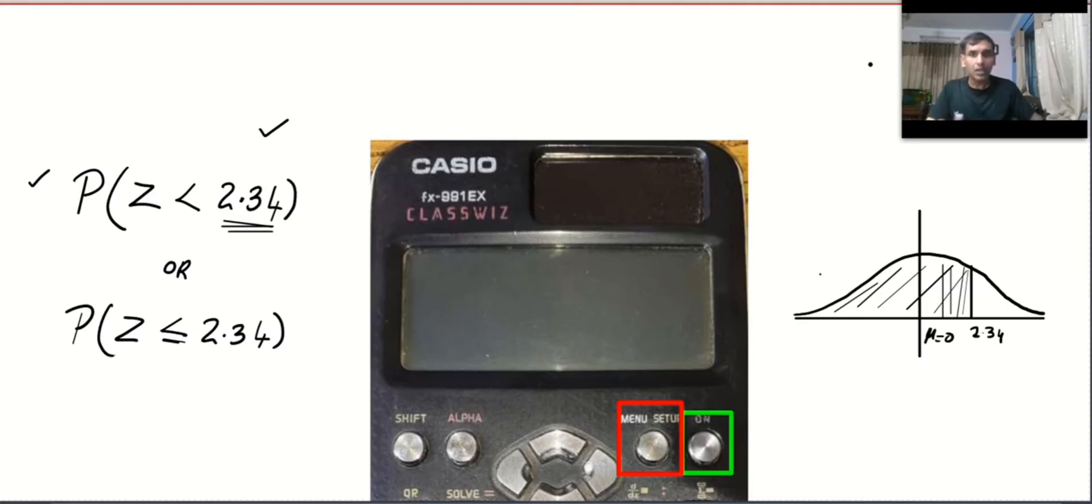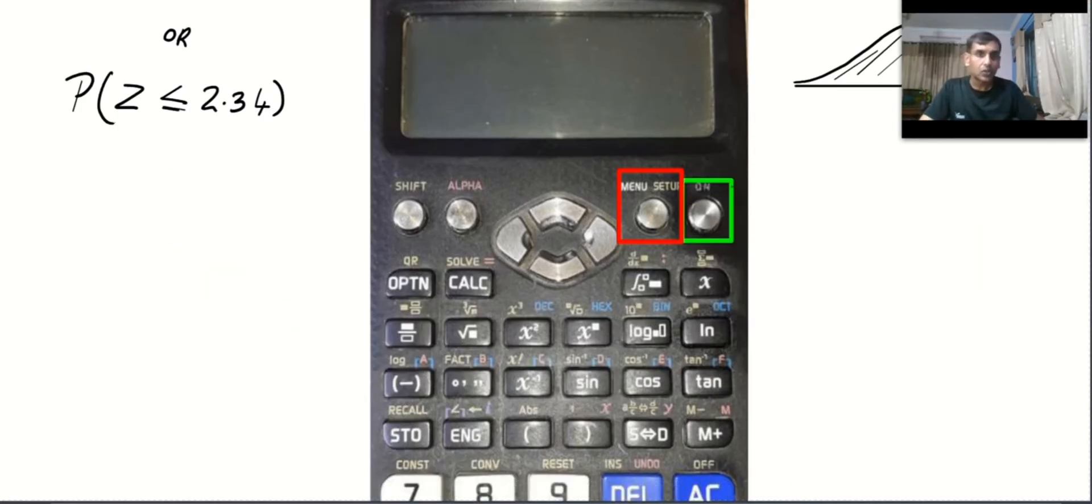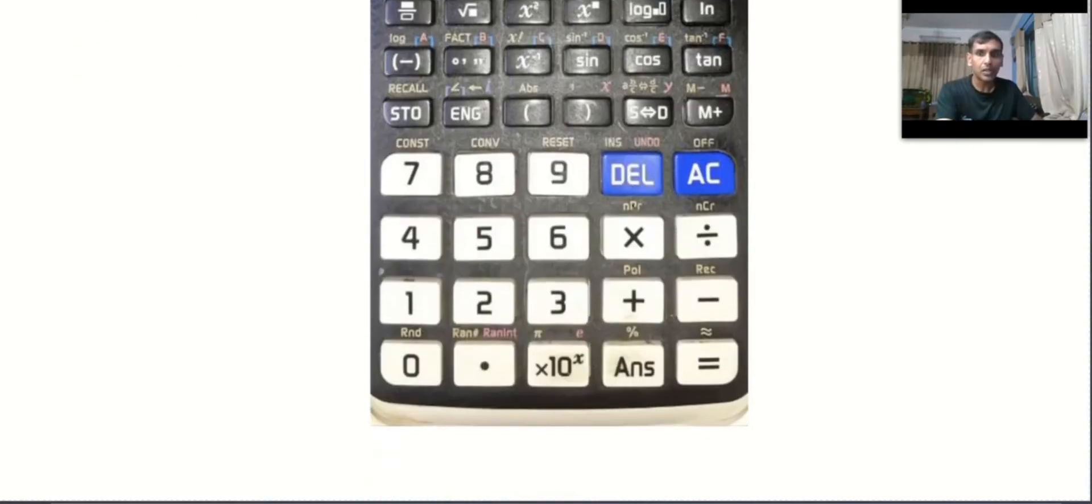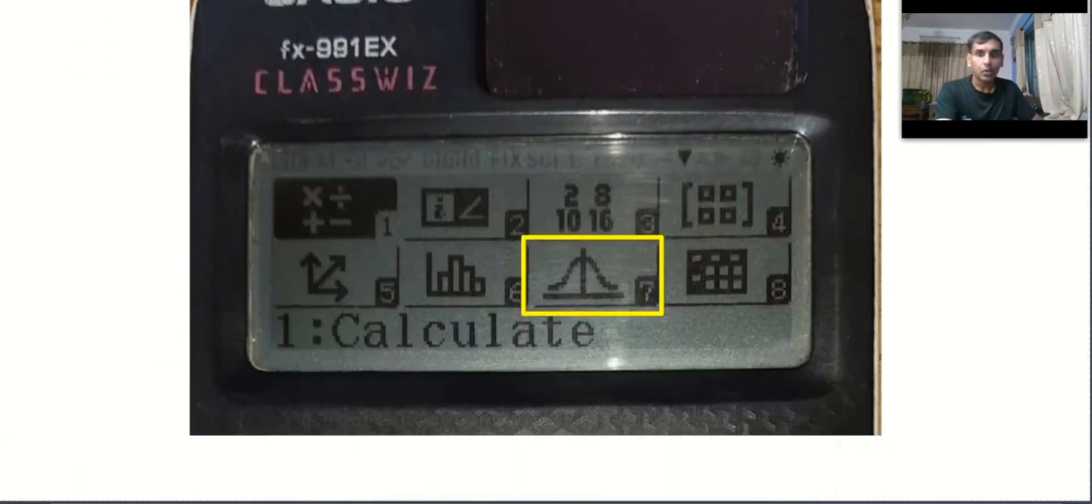Anyway, the method is very simple. All you have to do is take your calculator. Go for on and then menu, and I hope you can find the normal distribution over here.